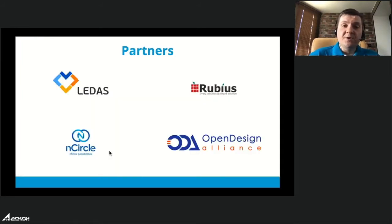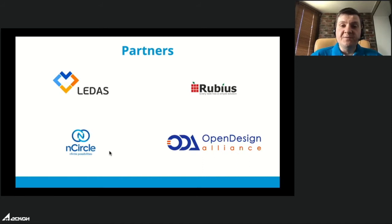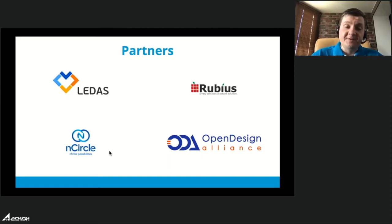We work closely with partners worldwide. We have three development partners — Encircle, Ledas, and Rubius — all experts in 3D modeling and developing CAD systems. If you don't have enough resources to integrate our kernel, you can ask them for help. We also have a bridge with the Open Design Alliance, allowing you to work with DWG format natively in your application alongside the C3D kernel.